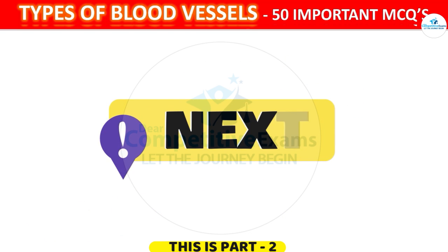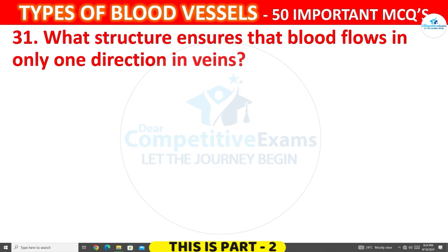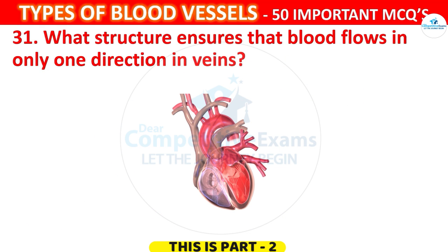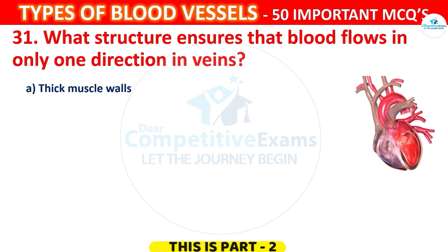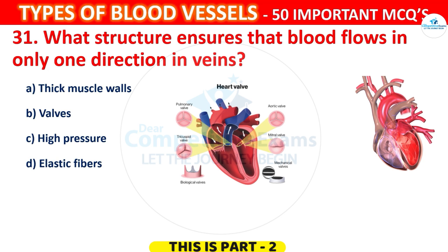Question number 31. What structure ensures that blood flows in only one direction in veins? Your options are: Thick Muscle, Valves, High Pressure, or Elastic Fibers. The correct answer is B, that is Valves.